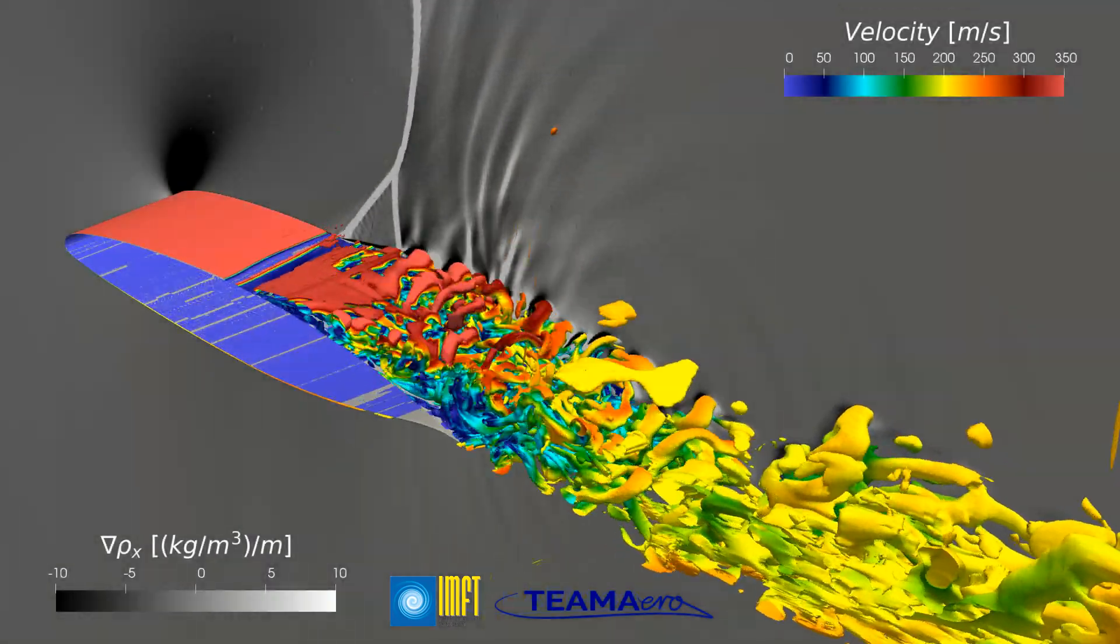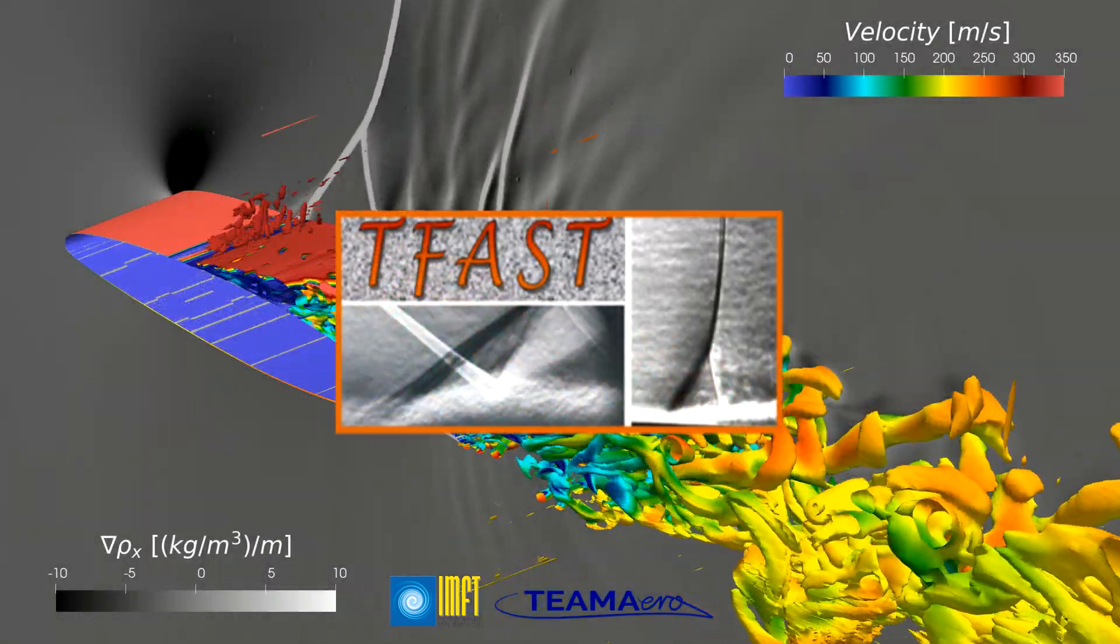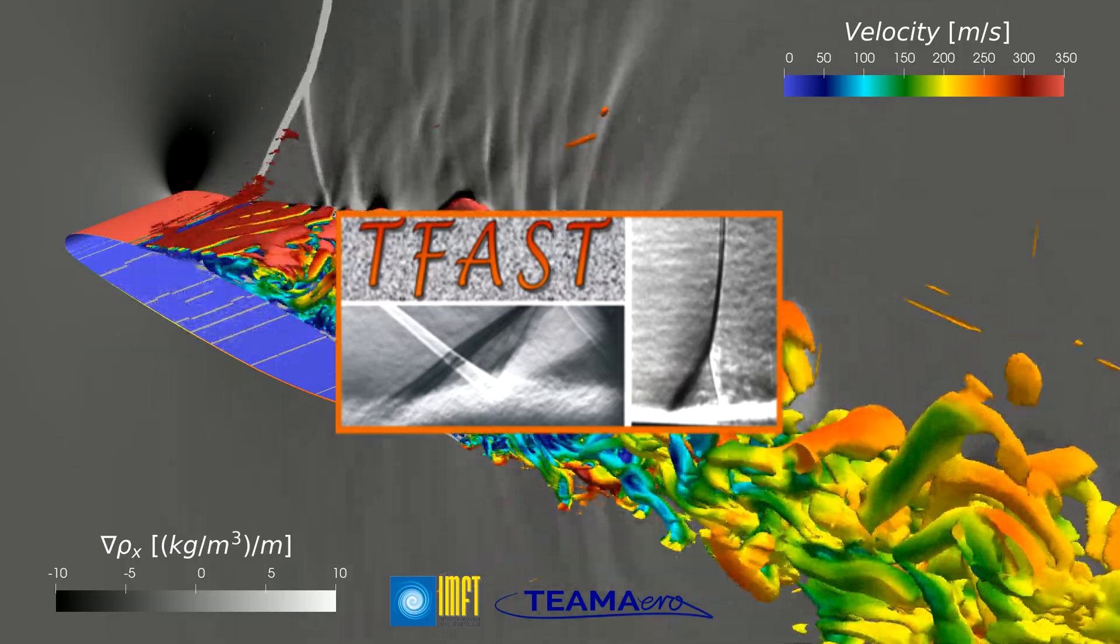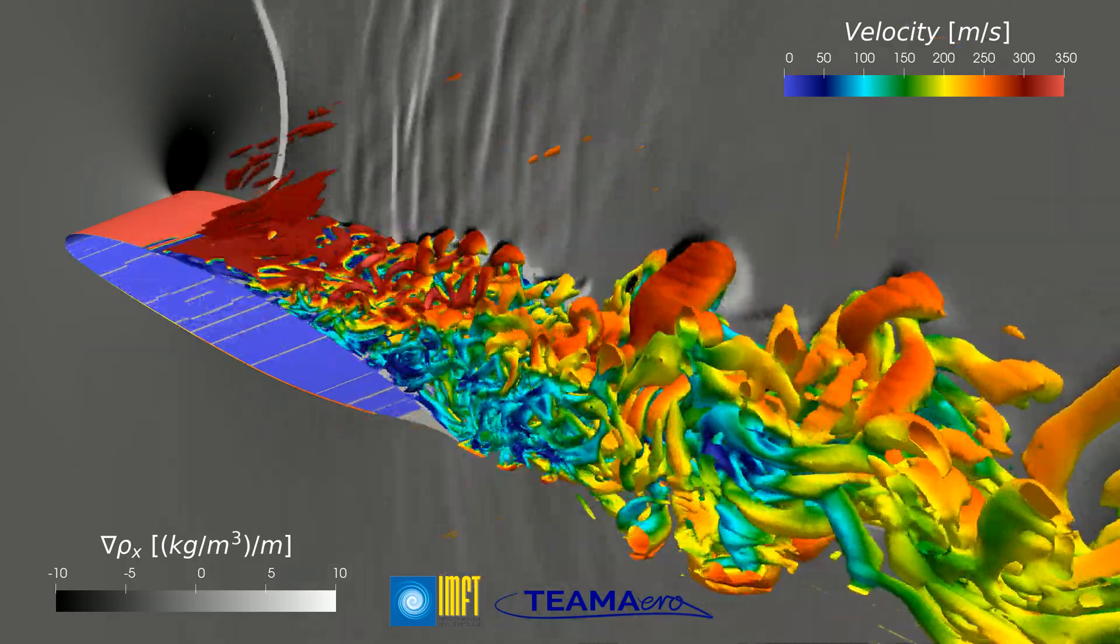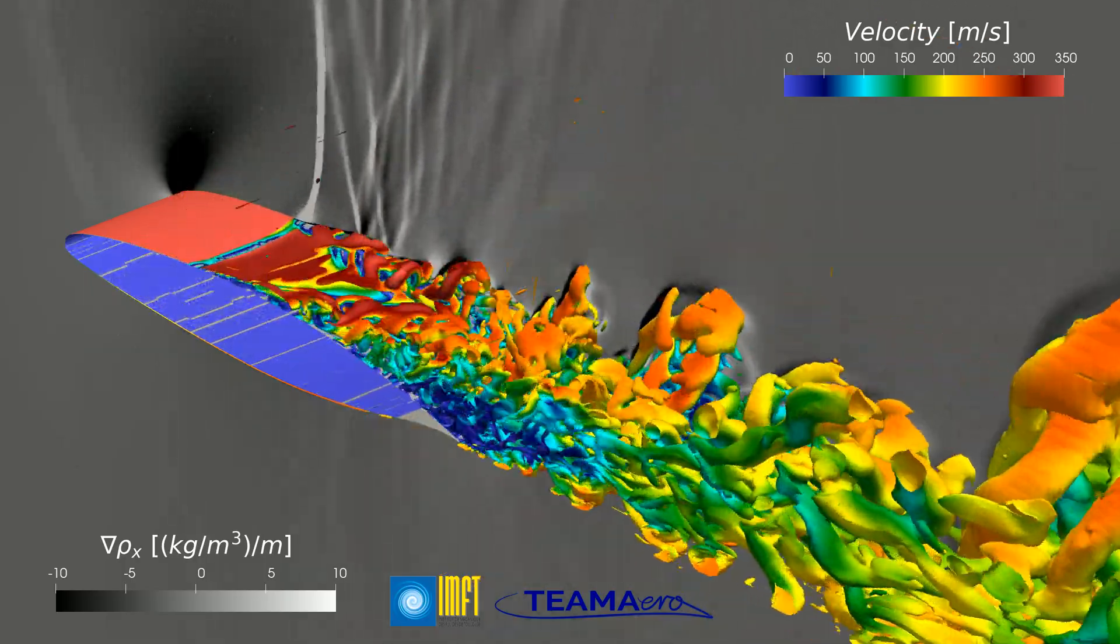If you want to know more about this test case, I recommend you to check out the European research project TFAST, where one of the goals was to study laminar shock wave boundary layer interactions and how to control them.